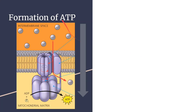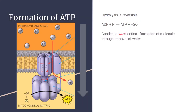Moving on to the formation of ATP: the hydrolysis reaction where ATP is broken down with water to give ADP and a phosphate group is in fact reversible. We can add ADP to the phosphate to get back our original ATP plus water — this is a condensation reaction, which is the formation of a molecule through the removal of water. ATP synthase is another enzyme that catalyzes the phosphorylation of ADP — the addition of a phosphate group — to reform ATP.